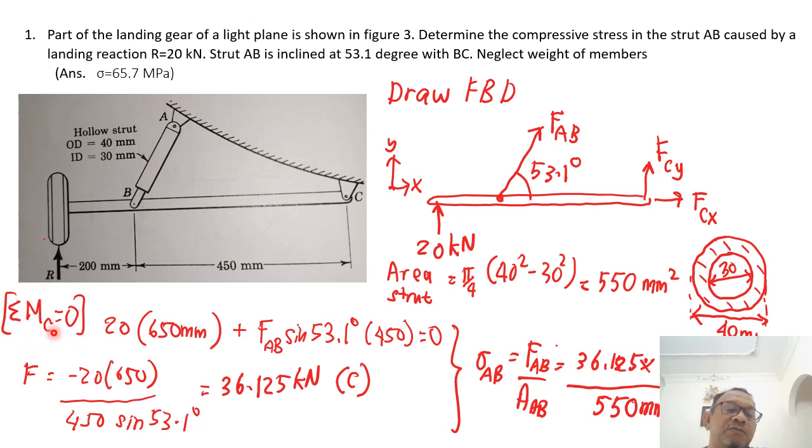So the shaded area is 550 mm square. And all the force will go through this strut. So I calculate the summation of force from moment at point C. Here is the point C. We want to calculate moment about point C. So we've got 20 kN times distance here. So it's 200 plus 450 is 650 mm. And FAB sin of 53.1. So we want to find the vertical component. And then times the arm. The arm is 450 mm. Equals to zero. So when you use this equation, you can get, because one equation one unknown directly solvable. So FAB equals to minus 20 times 650 divided by 450 sin 53.1 degrees. So we've got the force acting on the strut is 36.125 kN. This is in compression.